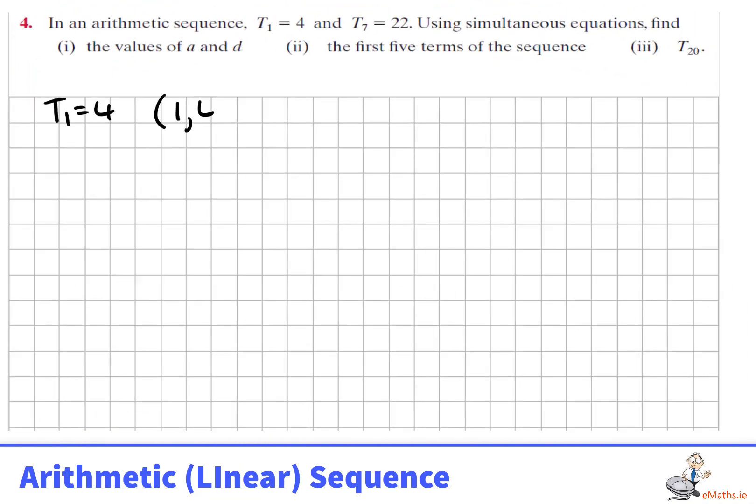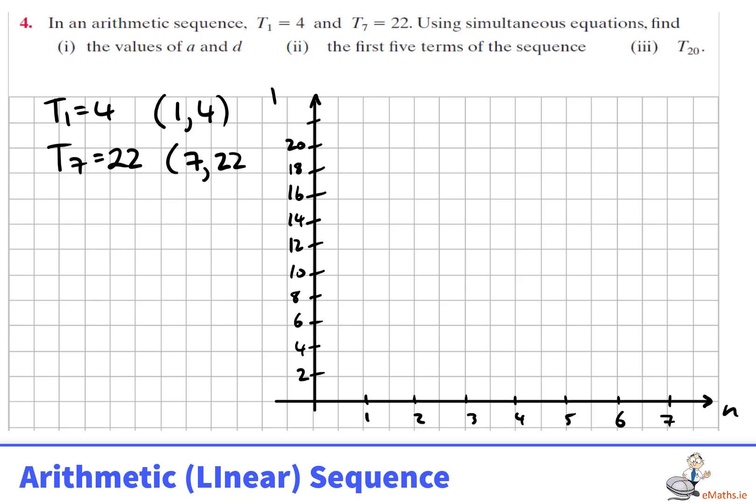A second approach that's different would be to consider this as a straight line, because we know it's arithmetic or linear. So I know that term 1 is 4, that's the point (1, 4), and term 7 is 22, the point (7, 22).